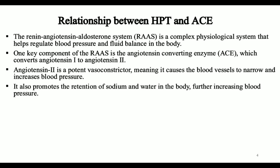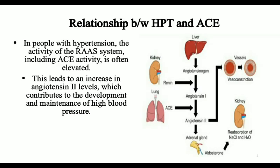Next we have to see the relationship between hypertension and ACE. ACE means angiotensin-converting enzyme. The renin-angiotensin-aldosterone system (RAAS) is a complex physiological system that helps regulate blood pressure and fluid balance in the body. You can see this relationship in chart form. The liver secretes angiotensinogen, which is converted into angiotensin-1 with the help of renin. Renin is secreted by the kidney, and angiotensin-1 is converted into angiotensin-2 with the help of ACE, which is secreted by the lungs.